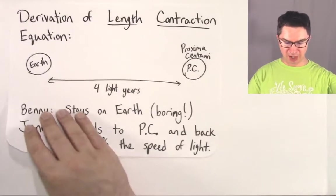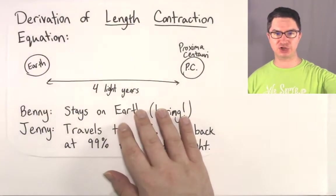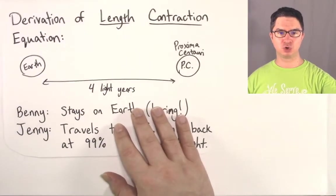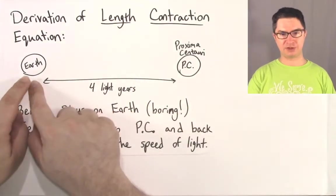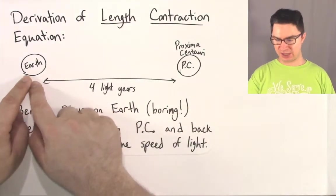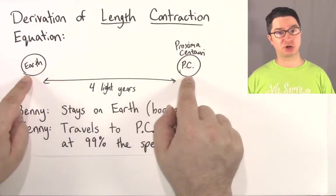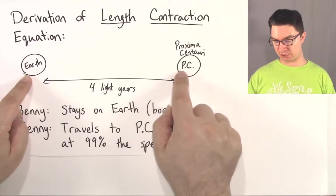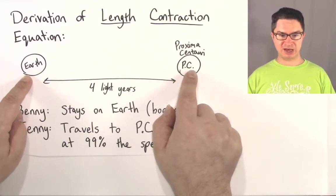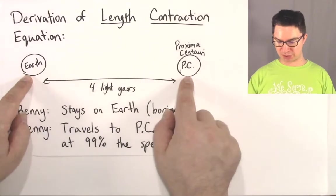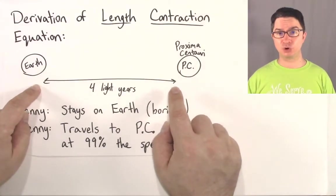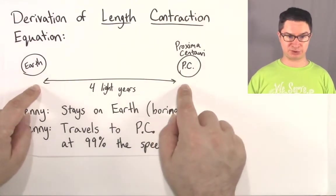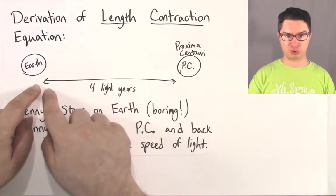When we derive the equation for length contraction, we're going to start with a diagram. This diagram has Earth on one side, and then our nearest star, Proxima Centauri, abbreviated as PC. The distance from Earth to Proxima Centauri is four light years, which means it takes light four years to travel from Proxima Centauri to Earth.